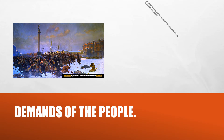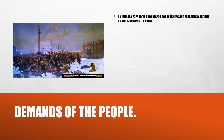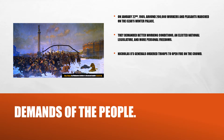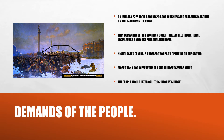On January 22nd, 1905, around 200,000 workers and peasants marched on the Czar's Winter Palace. The Czar at the time was Nicholas II. They demanded better working conditions, a national legislature elected by the people, and more personal freedoms. Nicholas II's generals ordered troops to fire on the crowd — men, women, children, and elderly people who were peacefully protesting. More than 1,000 people were wounded and hundreds were killed. This became known as Bloody Sunday.